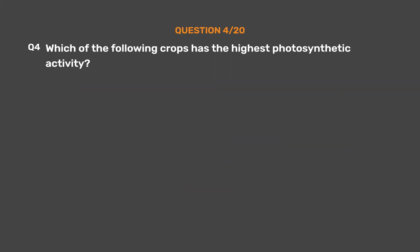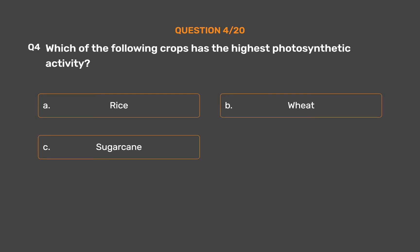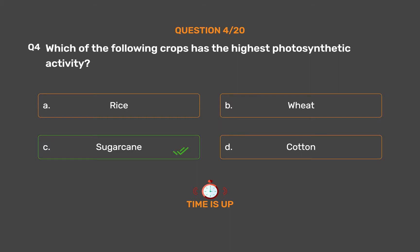Question number 4. Which of the following crops has the highest photosynthetic activity? Option A: Rice. Option B: Wheat. Option C: Sugarcane. Option D: Cotton. The correct answer is Option C, Sugarcane.